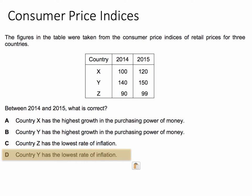The correct answer is D — country Y has the lowest rate of inflation. We can eliminate A and B because in all three countries there has been positive inflation. Inflation erodes or reduces the real purchasing power of money, so in both country X and country Y the purchasing power of money has gone down. So we're just looking for the country with the lowest rate of inflation.